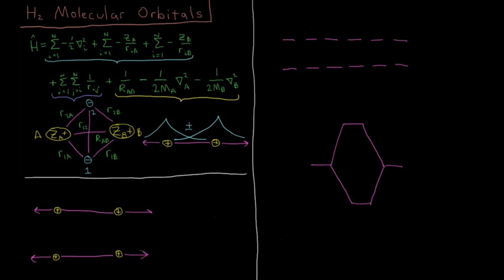We've previously looked at the molecular orbitals for H2+, the simplest possible molecule which only has one electron. So now we're going to move on to the Hamiltonian and molecular orbitals for diatomic molecules in general and look at what types of wave functions we get there.